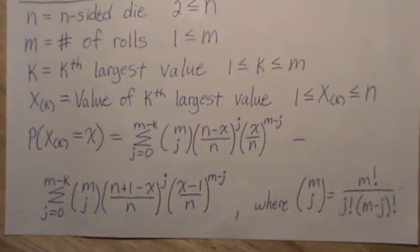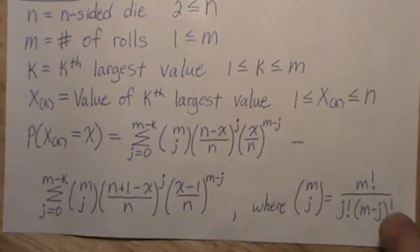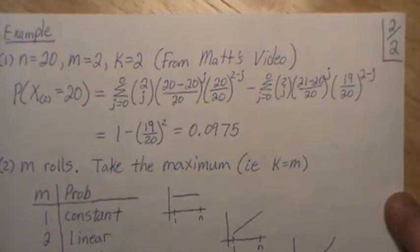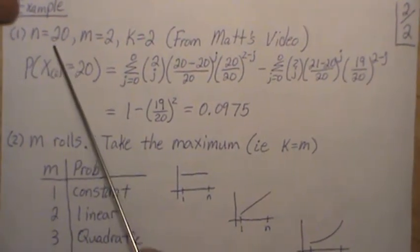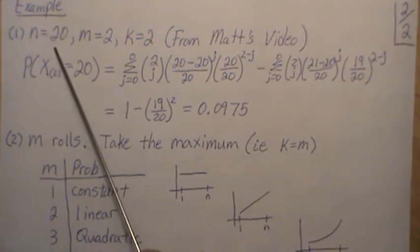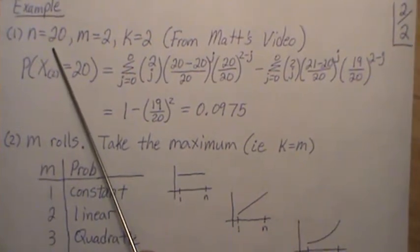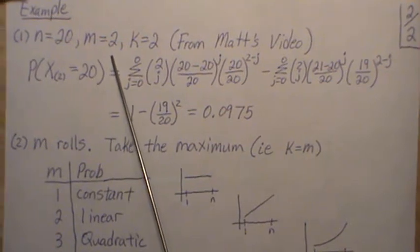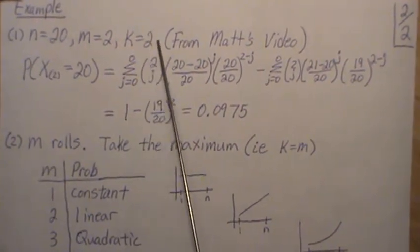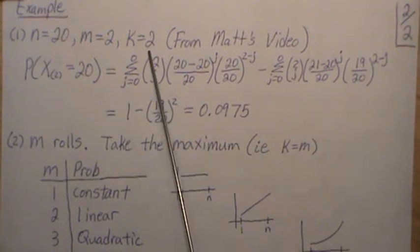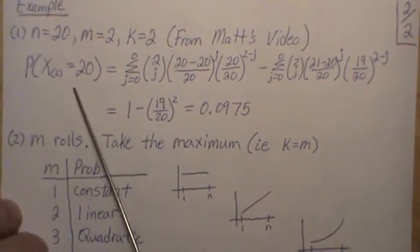And this is it. This is the general formula. Now let's go through a couple examples on the back side, six examples. Let's let n equal 20, and that's the die that Matt was rolling in his example. m equals 2, so we're only rolling it twice. And k equals 2, so that's the largest value from our two rolls.